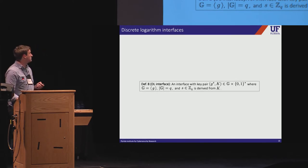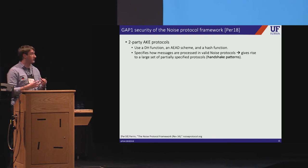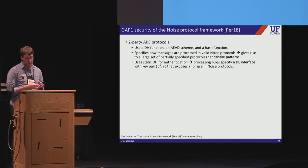But so I'll just quickly go through our main application, which was to the noise protocol framework. So for those who don't know, the noise protocol framework is used for designing and specifying authenticated key exchange protocols using just three primitives, a Diffie-Hellman function, an AEAD scheme, and a hash function. So noise can be thought of as a large set of partially specified protocols called handshake patterns. And each handshake pattern has its own security properties, and each is useful in a different context. So rather than explicitly define each handshake pattern, noise specifies how messages are processed in valid noise protocols, which in turn determines the set of valid patterns. This makes it possible to reason about key reuse in noise in a very general way.